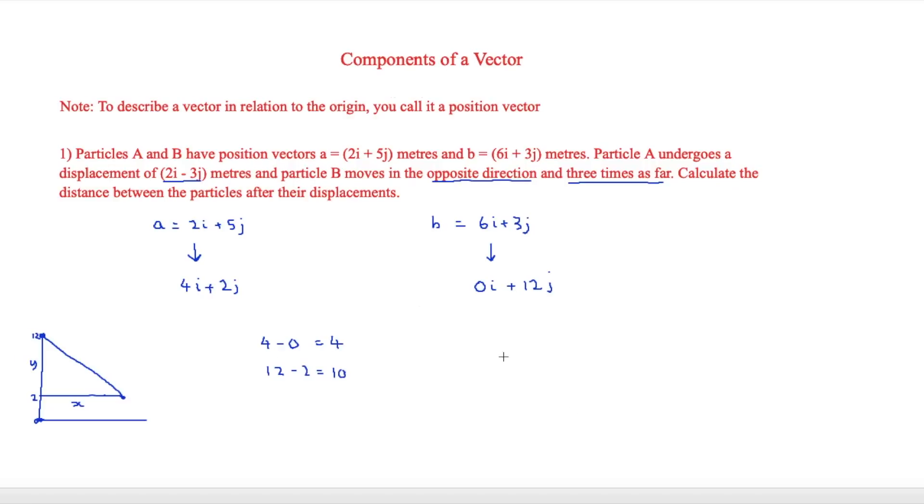And then by using Pythagoras' theorem, we're going to substitute that in. So this will go to 4 squared plus 10 squared, which is equal to 10.8 meters.